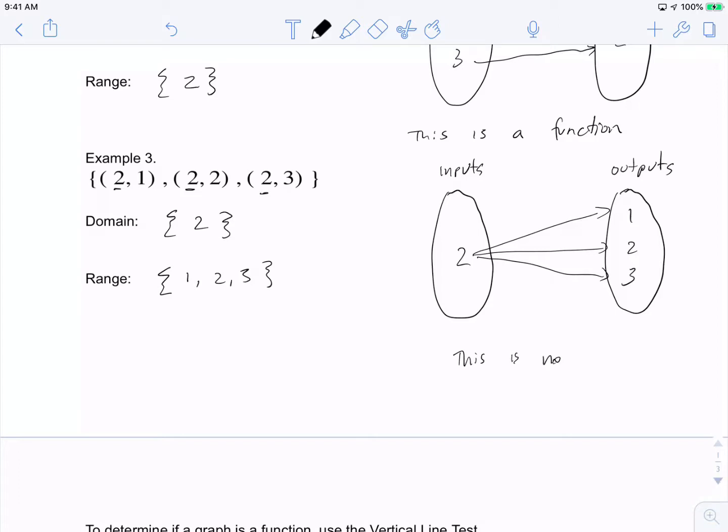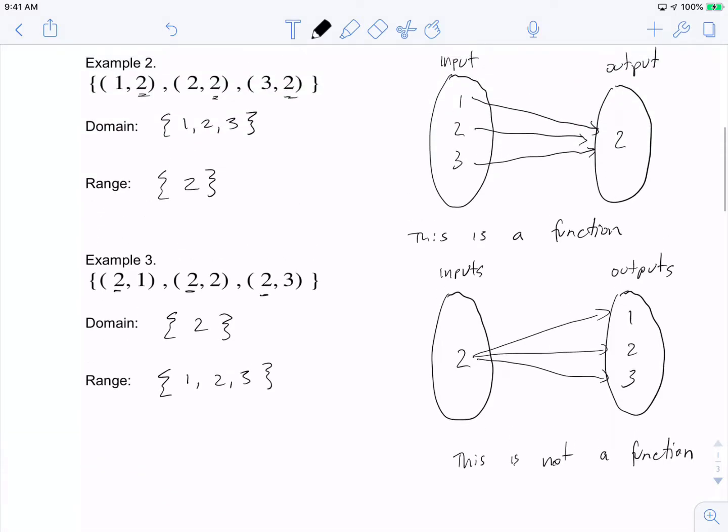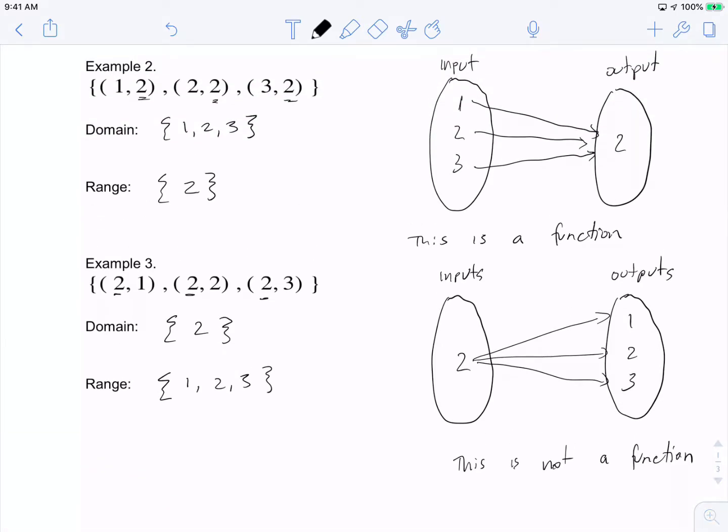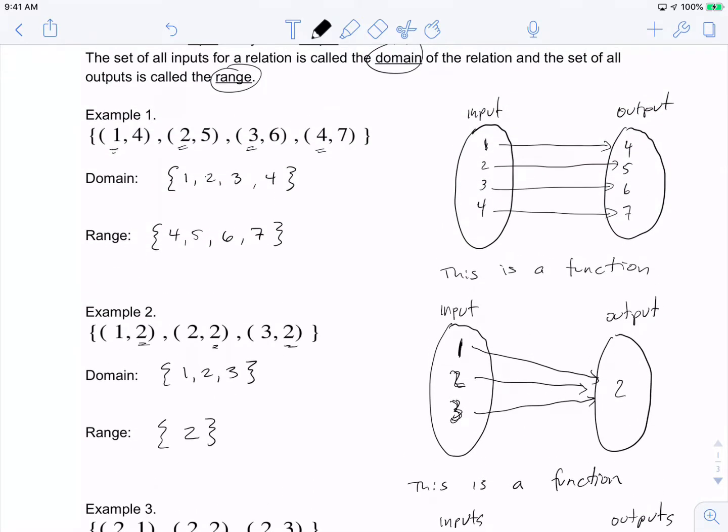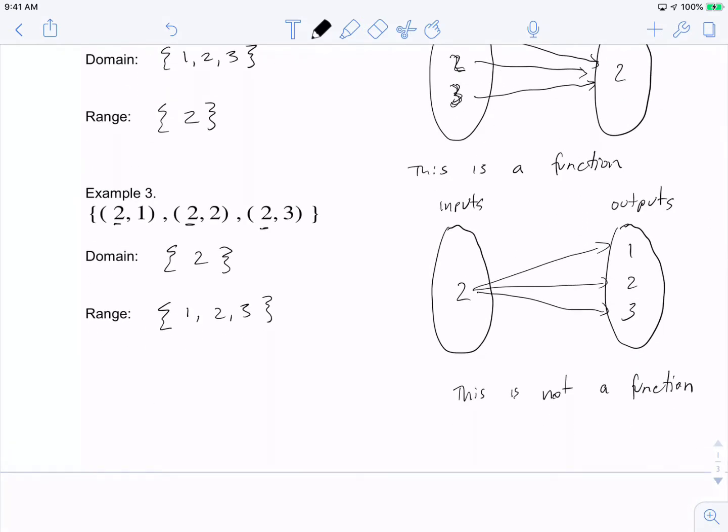This is not a function because the input goes to more than one value. In the previous examples, each input only went to one value. But in this last case, we see that the 2 goes to 1, 2, and 3. That makes it not a function.